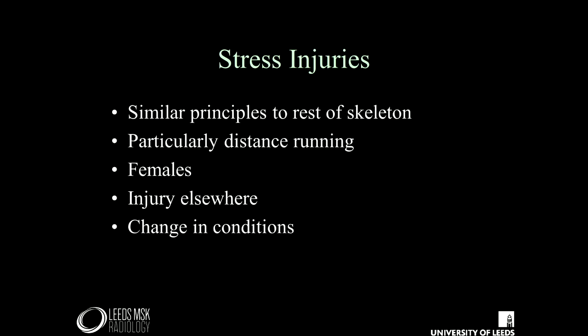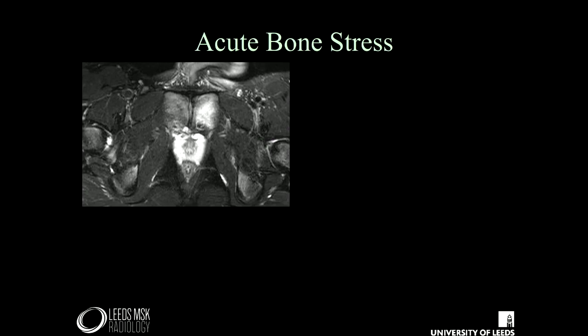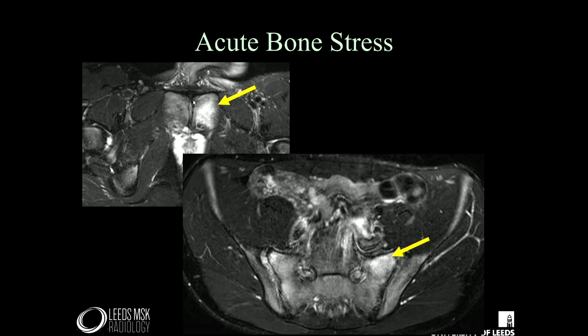Looking at acute injury: stress injuries through this region follow similar principles to the rest of the skeleton, usually in runners or athletes. Females are more predisposed because of the lack of muscular bulk surrounding the area. Injuries elsewhere can precipitate a change in training that then precipitates the stress injury. In this young 16-year-old footballer, there's quite marked edema in the left pubis compared to the right. In the remainder of his pelvis, there's corresponding stress in the SI joint — so this is a stress through the pelvis generally. The prognosis is excellent with rest and alteration in training.